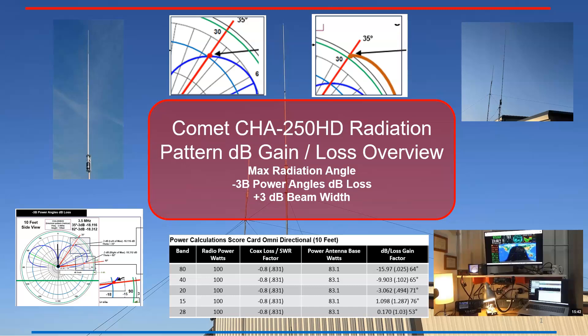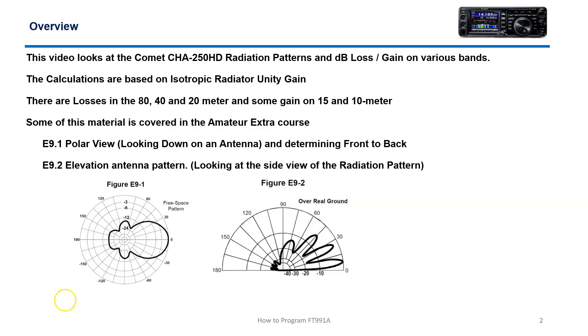This video today is going to talk about radiation patterns, half-power dB intersection points on the lobe, and plus 3 dB angle intersection points. We're going to look at the radiation patterns and dB loss and gain on various bands. All calculations are based on the isotropic unity gain of 1. There are losses on 80, 40, and 20, and there are some gains on 15 and 10.